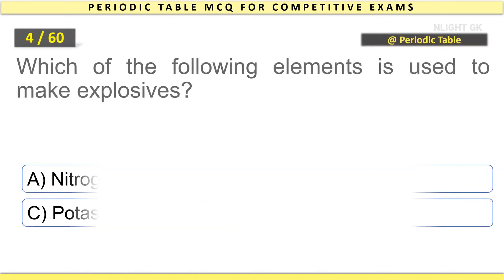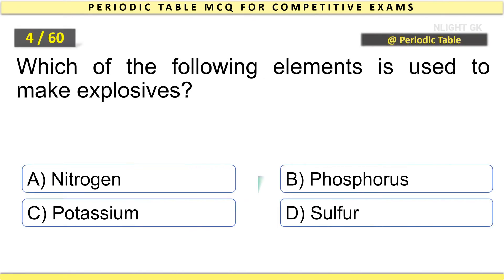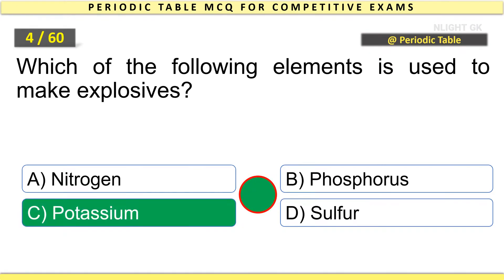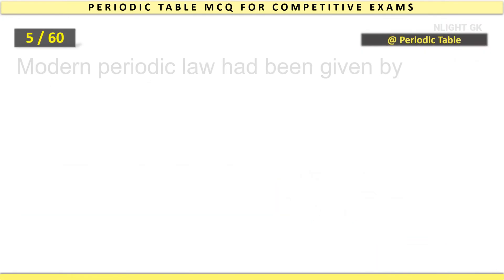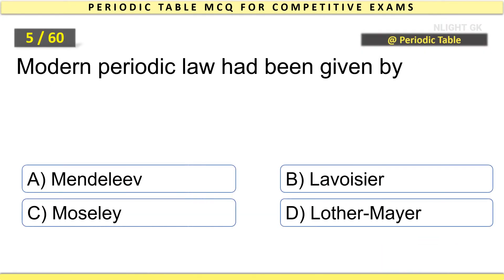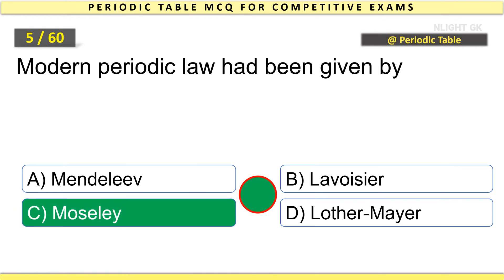Which of the following elements is used to make explosives? Potassium. Modern Periodic Law had been given by Moseley.